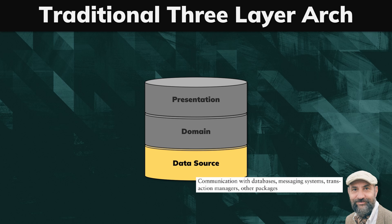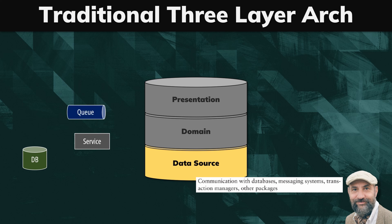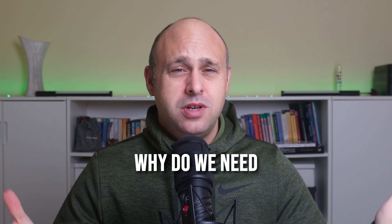Most applications retrieve and store data in a database, but this layer includes other systems like messaging systems and third-party applications. If we leverage these three layers we're already in a very good position — so why do we need the onion architecture?